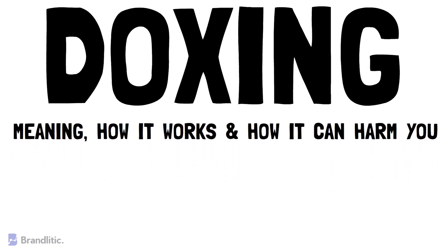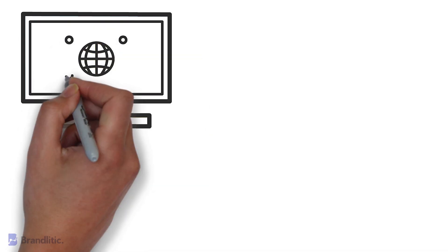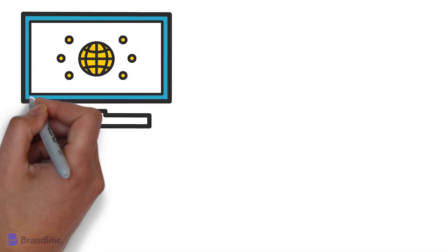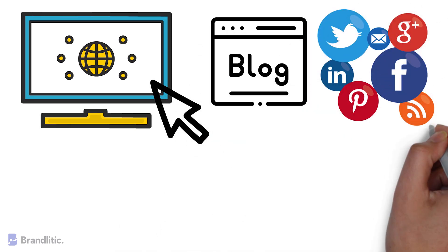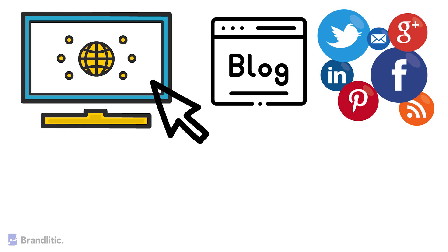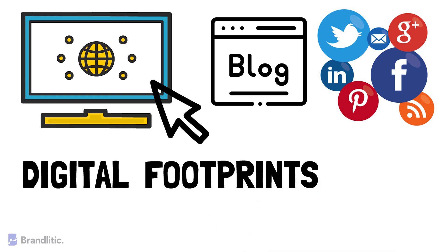It's usually spelled in two ways: doxing and doxxing. Before understanding what doxing is, let's see what's the need of it. Almost every day, we reveal tons of information about ourselves online — by simply visiting our favorite website, reading a favorite blog, and engaging with content on social media, which is home to all our personal information, photos, and geotags telling the world who we are and where we are. These individual data records are called digital footprints and are spread all over the internet.